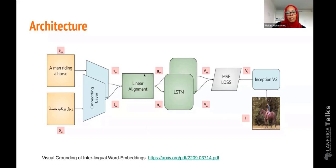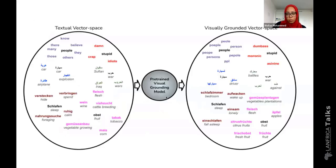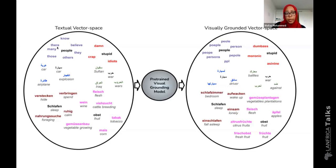The overall goal of this network is to get a linear alignment able to map any textual word vector to the visual space, regardless of the language. I found that visual grounding helped better in capturing the meaning of the word, and it focuses on similarity more than relatedness. In the visually grounded space, for example, the nearest neighbors of the word 'people' are 'people,' 'person,' 'persons,' while in the textual space they are 'believe,' 'know,' and 'many' — words that are not similar in meaning but co-occur frequently in the textual space. This is where visual grounding helps, and I noticed a similar trend across all three languages.